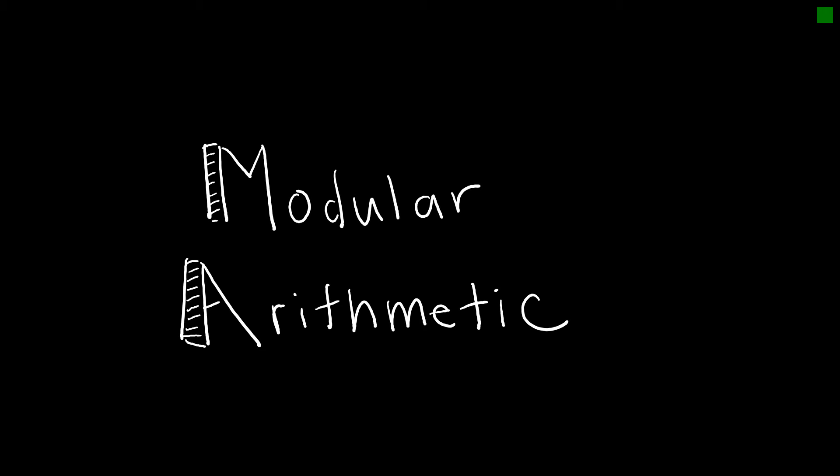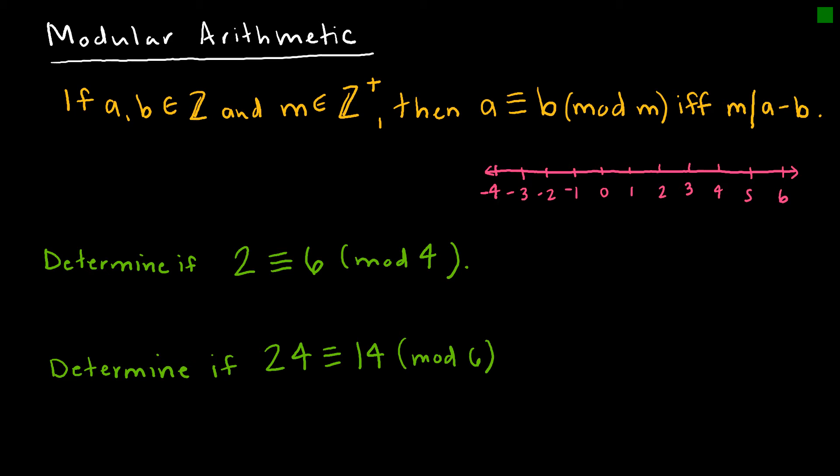Let's take a look at modular arithmetic. The definition tells us that if a and b are integers and m is a positive integer, then a is congruent to b mod m if and only if m divides a minus b. Before we look at this definition and do some practice with it, I want to make sure we're very clear on the concept of modular arithmetic.